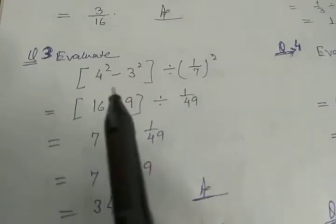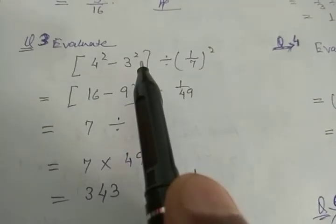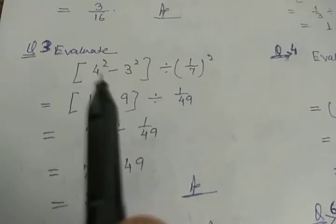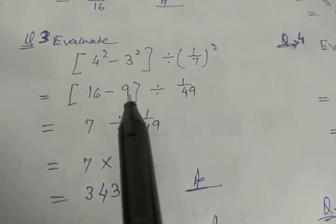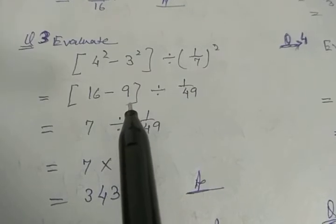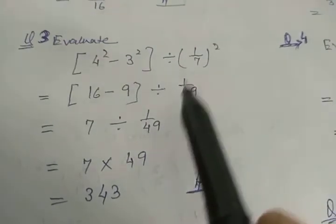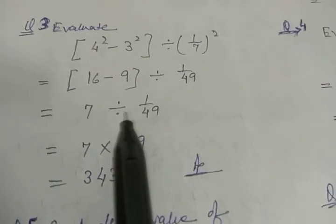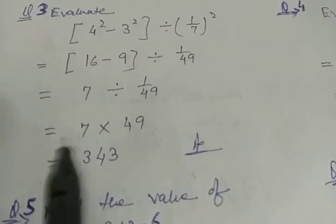Next problem: (4² - 3²) ÷ (1/7)². Now 4 to the power 2 means 4×4 = 16, and 3 to the power 2 is 9, so 16 minus 9 is 7. And (1/7)² is 1/49. So 7 divided by 1/49 — since it is division, take the reciprocal, which is 49. So 7 × 49 = 343.